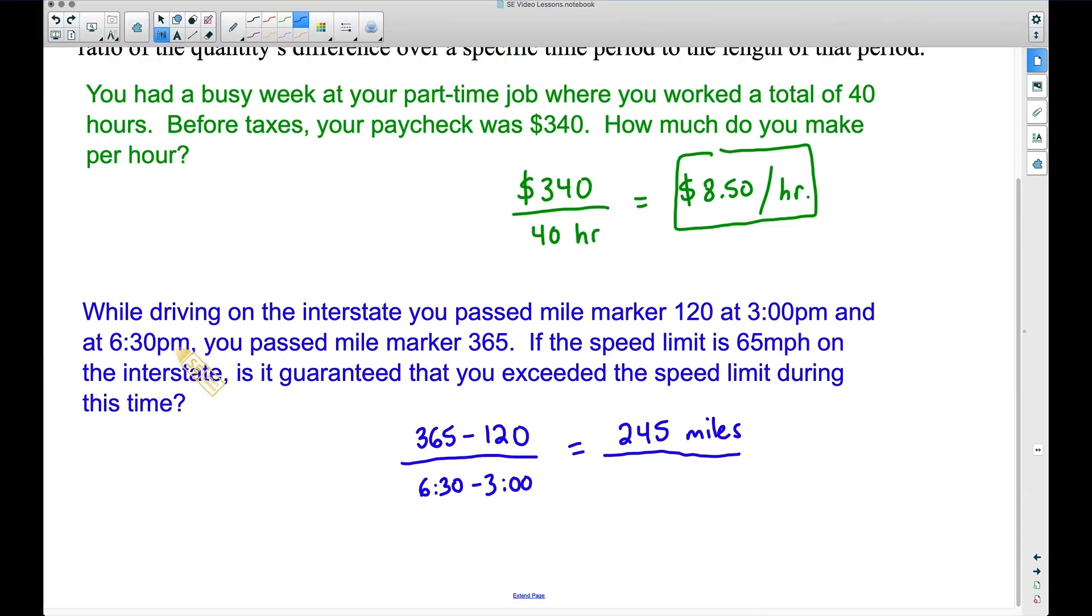3 o'clock to 6:30. How much time has passed? Well okay we got 3 o'clock. So 4 o'clock is one hour, 5 o'clock is two hours, 6 o'clock is three hours, and then it's at 6:30 so that's going to be three and a half hours. And a way we can think about that is 3.5 hours. Notice we have miles per hour. Let's go ahead and divide this. And 245 divided by 3.5 is 70 miles per hour.